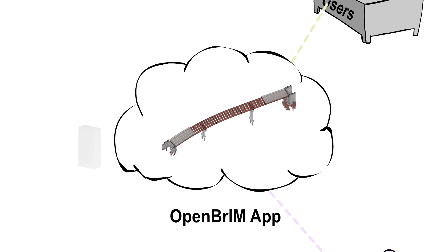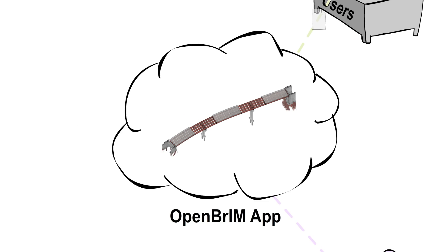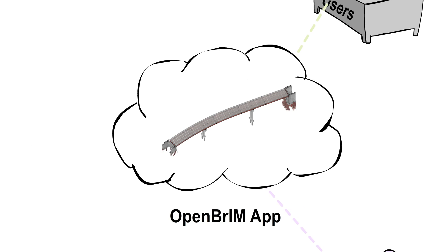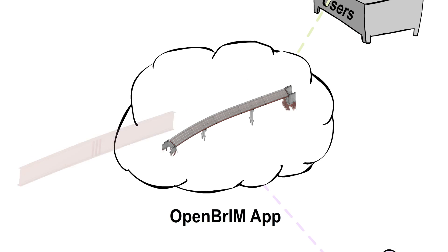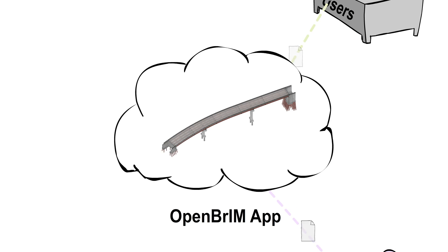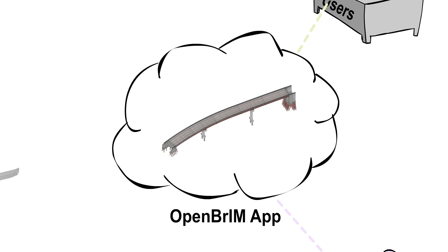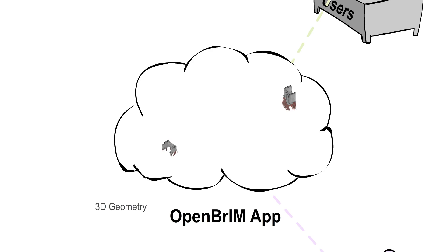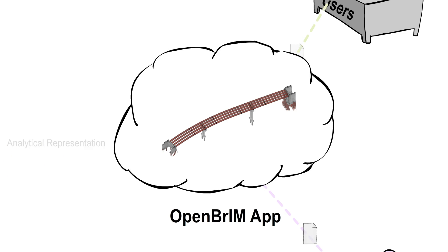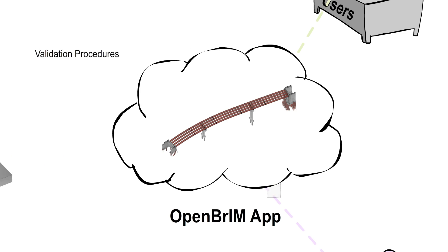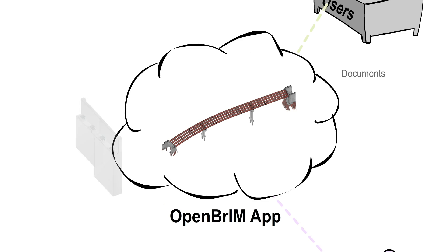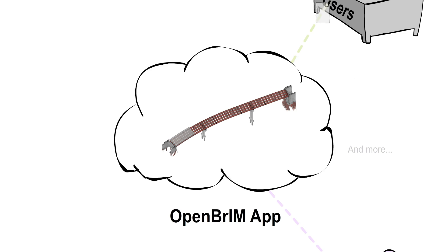OpenBrim App is an on-cloud application where engineers create and maintain information models of their structures using OpenBrim Library objects. Using the information models, we can have access to 3D geometry, analytical representation, validation procedures, reports, documents, and more.